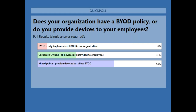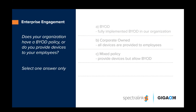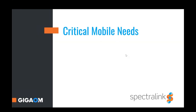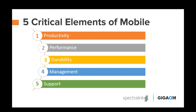Andrew makes a great point — it really comes down to whether it's for specific needs, or just general email and calendaring. Let's jump into our next topic: the critical mobile needs across the board. We've identified five critical elements spanning productivity, performance, durability, management, and support — soup to nuts. David, can you give us some statistics on the size of today's mobile workforce?